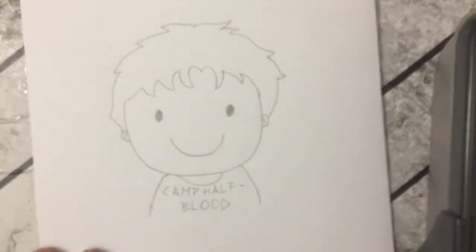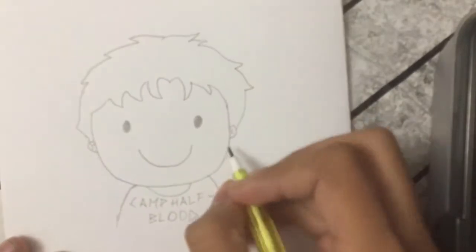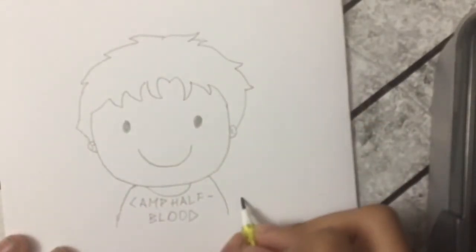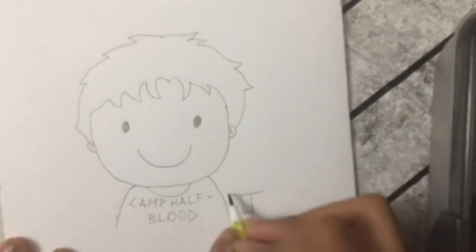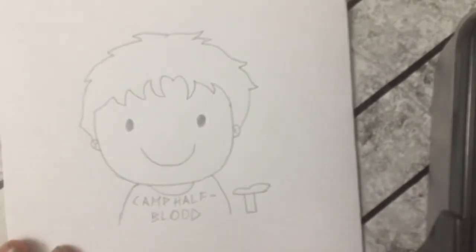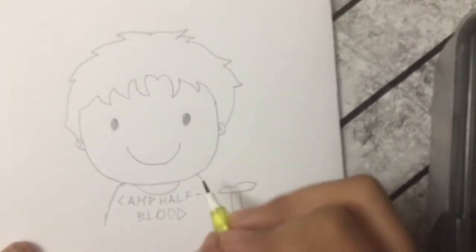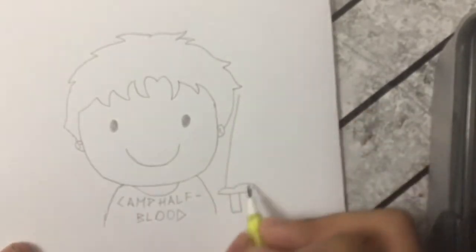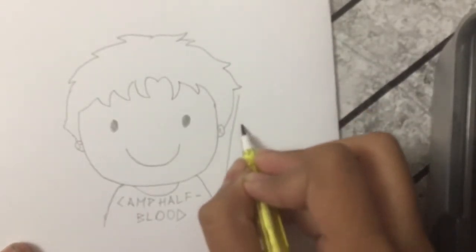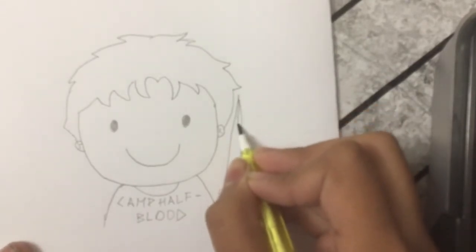And I'm gonna draw his sword, the riptide, so I'm gonna draw a rectangle, I'm gonna draw another line, then that goes in like this. And then I'm just gonna go up like this from both sides, and then a line in the middle.